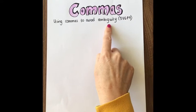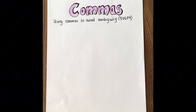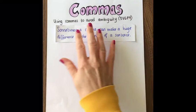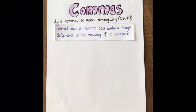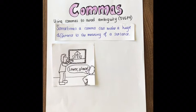In today's video we're going to be looking at using commas to avoid ambiguity. Ambiguity means that something could be misunderstood or misinterpreted, causing confusion for the reader. We use commas because commas can make a huge difference to the meaning of a sentence.